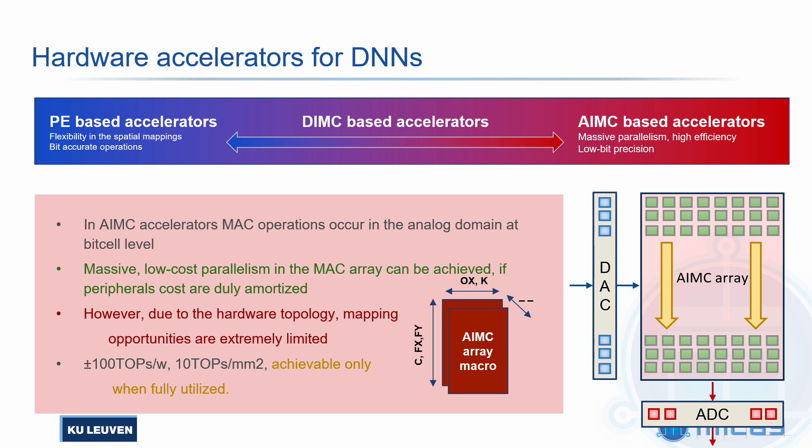On the other end of the spectrum in terms of hardware accelerators for neural networks, we have all the in-memory computing based accelerators. In these types of accelerators, the computation happens in the analog domain. At memory cell level, we have an input vector which is sent through the word lines, and the value on these word lines is then combined with what is stored in each of the cells. The result of this combination is accumulated across the bit lines and converted back to digital domain by means of some ADCs at the bottom of the array. Thanks to this type of computation, we can achieve extremely high energy efficiencies and extremely high parallelism as well. But this is only achieved if we can fully utilize the array — only by doing so can we amortize the cost of the peripherals, which consist of the DACs and ADCs.